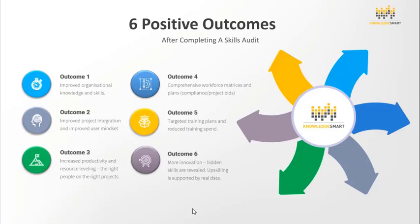Outcome six: more innovation. Hidden skills are revealed and upskilling is supported by real data. If leadership takes the organization in a new direction, we're able to check internally whether we have the right skills to address those needs before incurring more expensive recruitment costs.